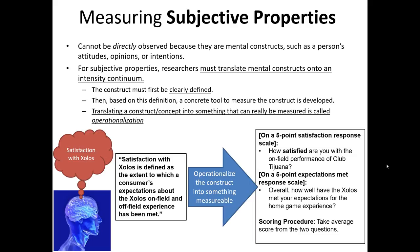For example, look at our definition of satisfaction. If we haven't defined satisfaction correctly and this definition is inappropriate, then anything we do subsequently is going to be incorrect. Secondly, look at these two survey questions. One deals with satisfaction of on-field performance, and one deals with expectations being met for the home game experience. There might be other things that feed into people's satisfaction with Club TJ that's not about the home game experience nor on-field performance — such as television, radio, merchandise, and the behavior of the team off the field. We're ignoring those entirely with our operationalized measures.